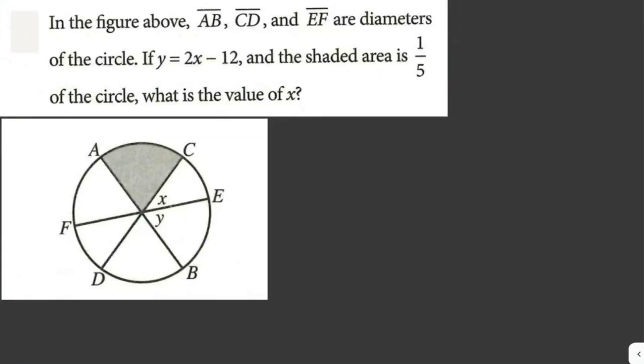Let's solve some math problems. In the figure above, segment AB, segment CD, and segment EF are diameters of the circle. If y equals 2x minus 12 and the shaded area is one-fifth of the circle, what is the value of x?